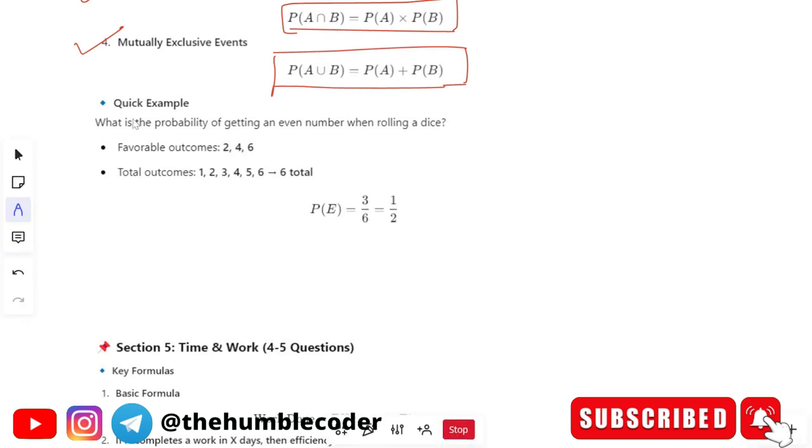Let's see the quick example for this purpose. What is the probability of getting an even number when rolling a dice? So favorable outcomes when rolling a dice are 2, 4, 6, rest all are odds. So the total outcomes are going to be 1 to 6 the total possible outcomes. So our formula we will substitute that is favorable outcomes divided by total outcomes and then we will get our probability as 1 by 2.